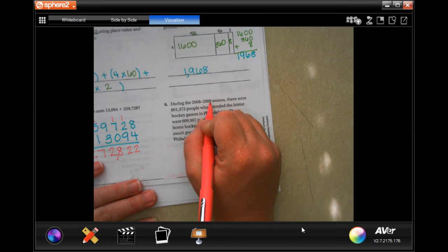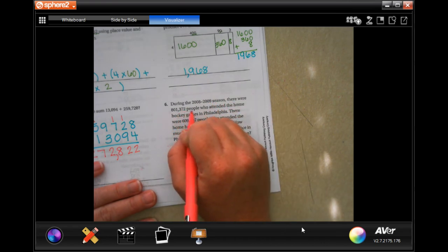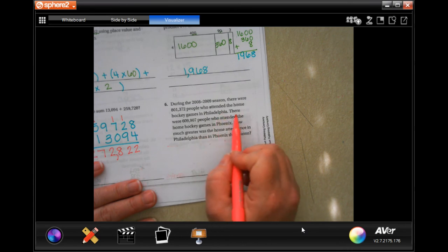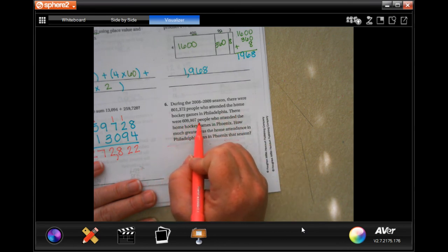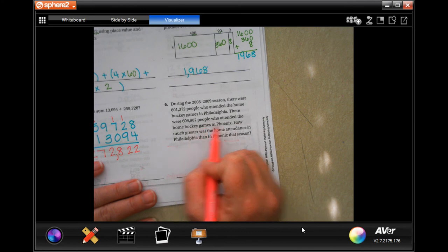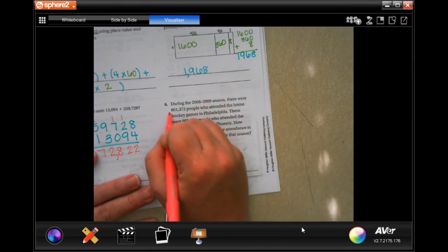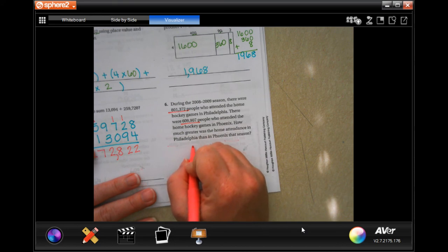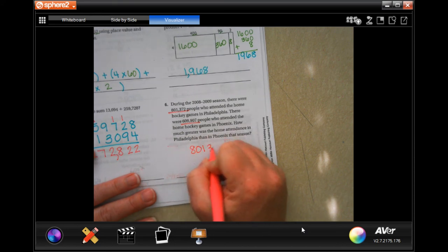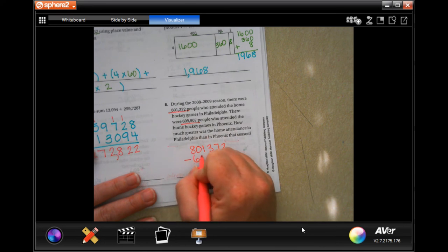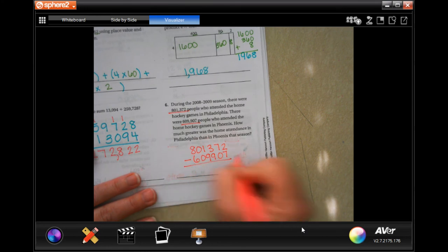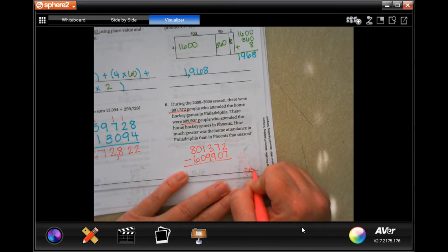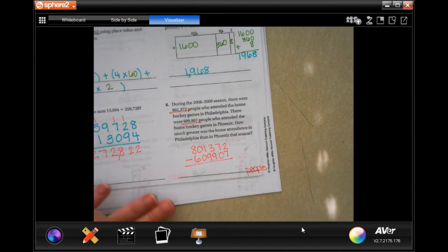During the 2008-2009 season, there were 801,372 people who attended the home hockey games in Philadelphia. There were 609,907 people who attended the home hockey games in Phoenix. How much greater was the home attendance in Philadelphia than in Phoenix? So, we need to find the difference, which means we need to put the bigger number on top and subtract the smaller number. That's how we find the difference. And whatever it is, it's going to be people.